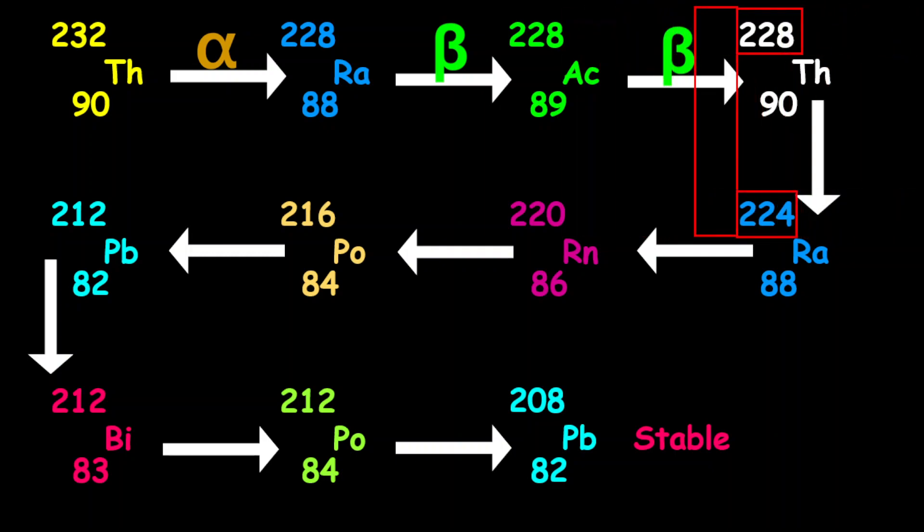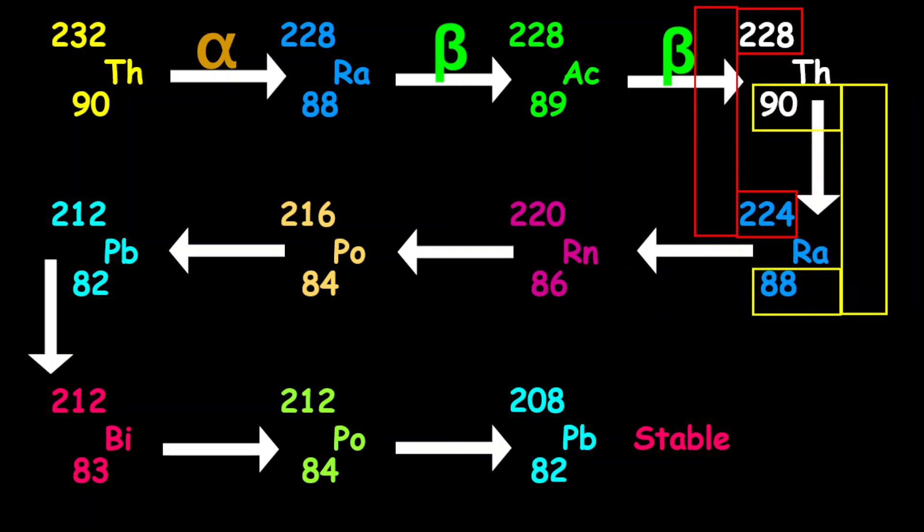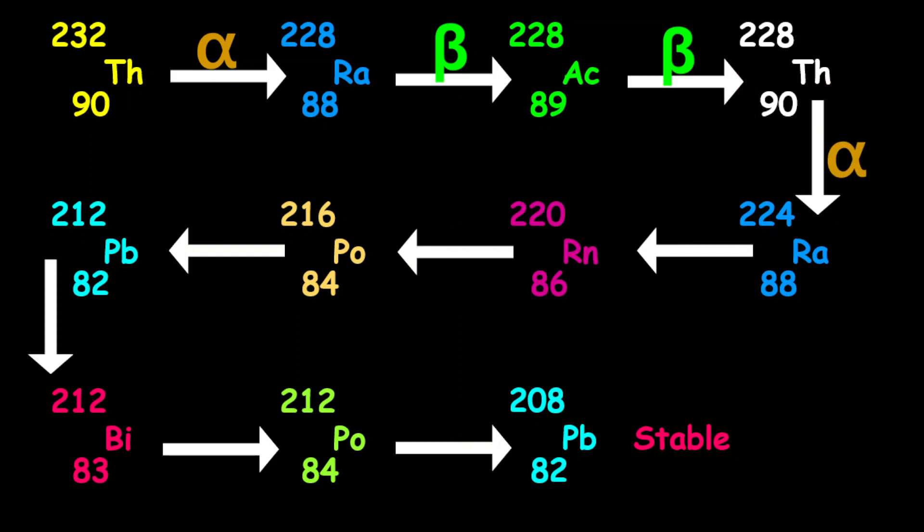Moving from thorium back into radium-224, notice the mass number decreased by 4 and the proton number decreased by 2, so therefore this is an alpha decay.